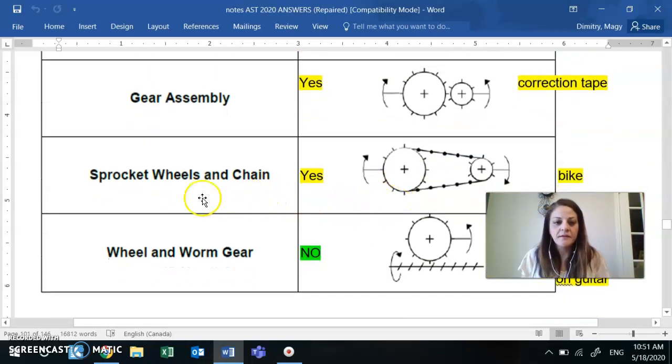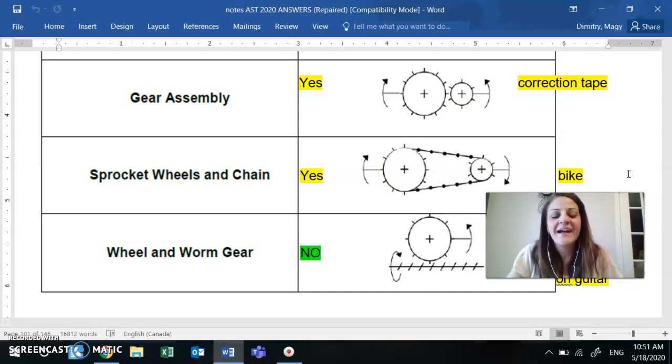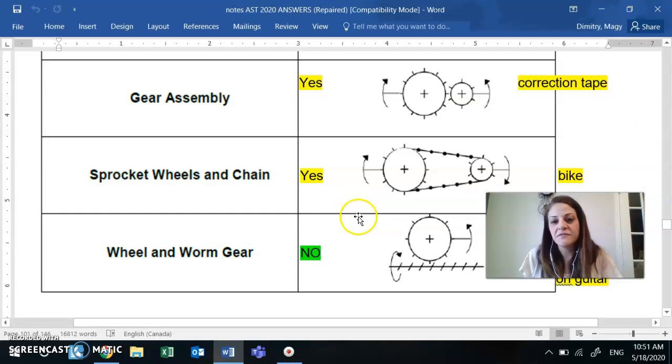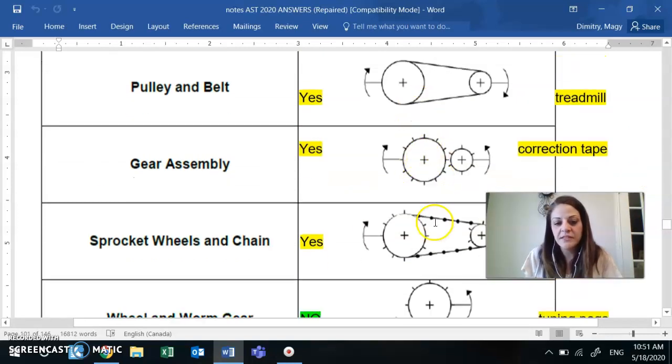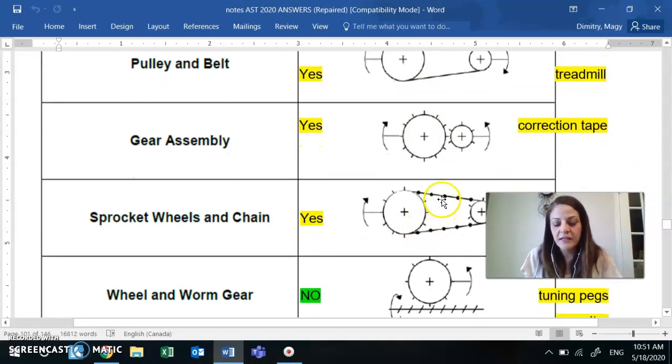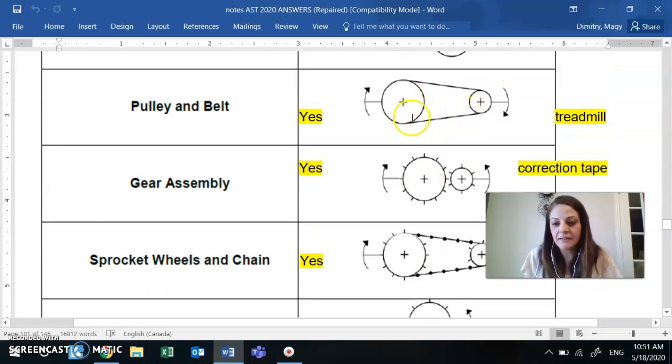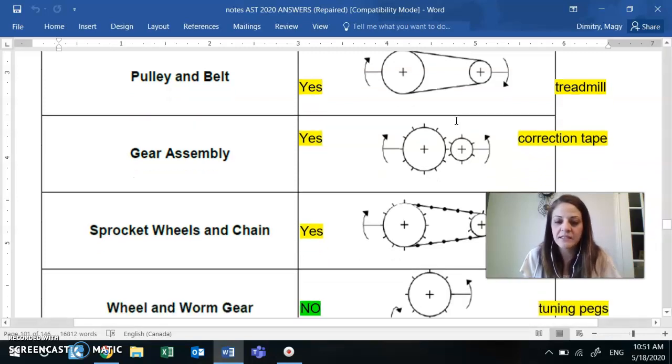And the sprocket wheels and chain, that would be in a bicycle. I don't have a bicycle in my dining room right now, but I'm sure you know what a bicycle looks like. See the difference between the belt and pulley and the sprocket wheels and chain. The main difference is that one is a belt, it's a flat belt. It could be made of rubber or a leather type material or tough plastic.